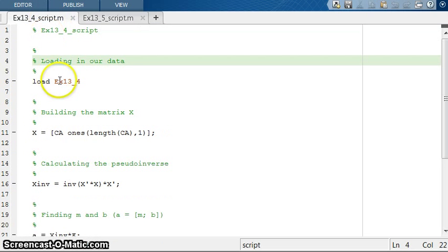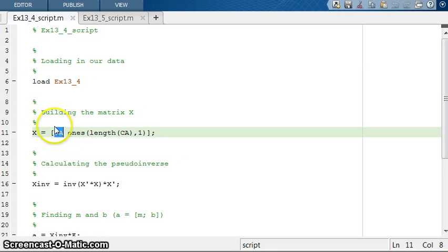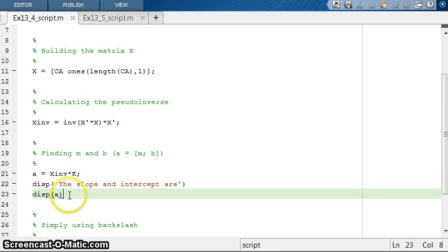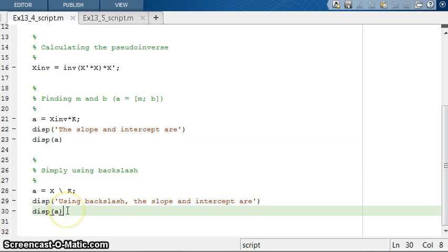So if we flip over to MATLAB, then what we can do is we can load in our data. Now I pre-loaded it into this MAT file so I can just load it directly from here when I run the script. I can build our matrix X where we have CA in the left column of X and in the right column of X we just have a whole bunch of ones. And this is a command that just tells you give a bunch of ones in a column vector. You can calculate the pseudo-inverse this way and get that answer. Or you can just simply use the backslash. And so if I run this script, then what I get in MATLAB is I get this answer.